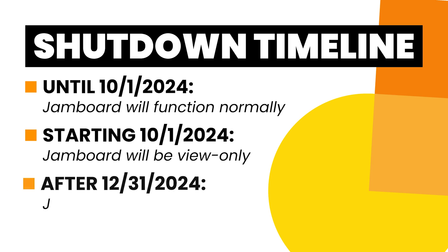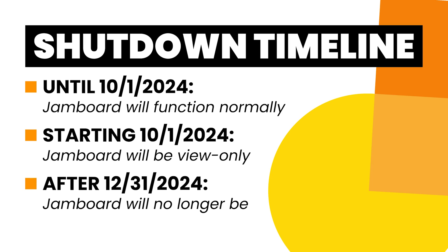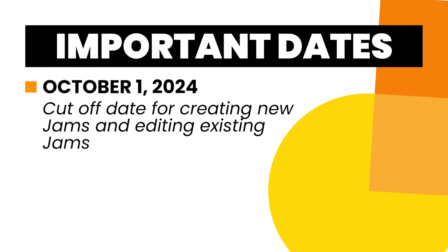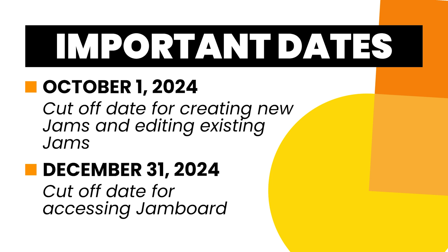Then after the last day of the year — December 31st, 2024 — Jamboard will be no longer accessible. That means at that point you can no longer open or view existing jams, and you already were not able to edit or create new ones by the beginning of October. So there are really only two dates to pay attention to: October 1st, 2024 is the cutoff for creating and editing jams, and December 31st, 2024 is the cutoff for using Jamboard at all.